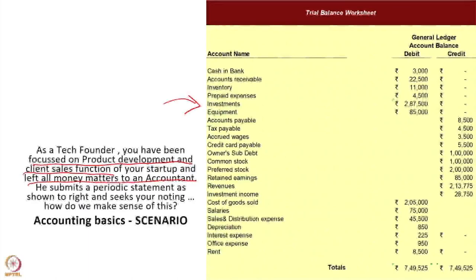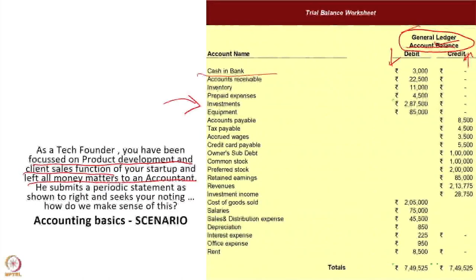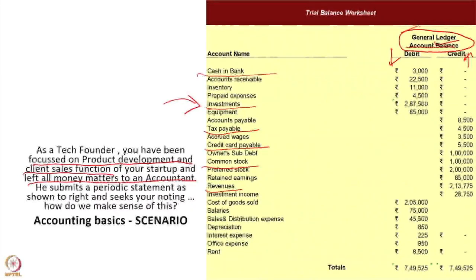Let's start from ground zero and look at this report. At the top it says the general ledger account balances. You have a general ledger and account balances. The account balances are of two types: debits and credits. There are different kinds of descriptions here, some of which you may be familiar with — such as investments, taxes, credit card payables, that being the amount you need to pay the credit card company, common stock being the investment in the company, or revenues that the business earns.